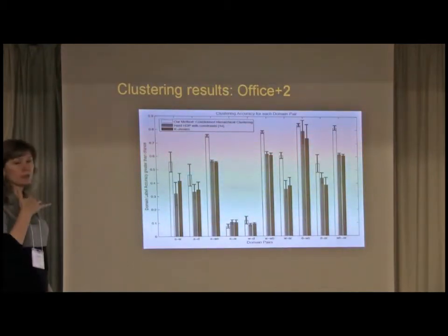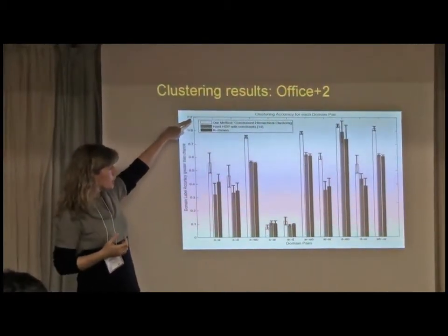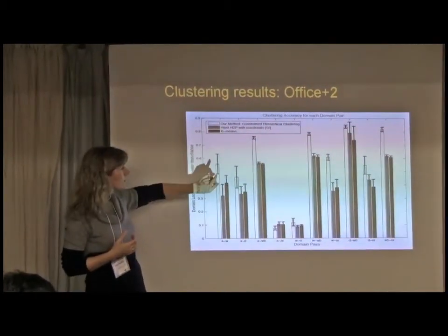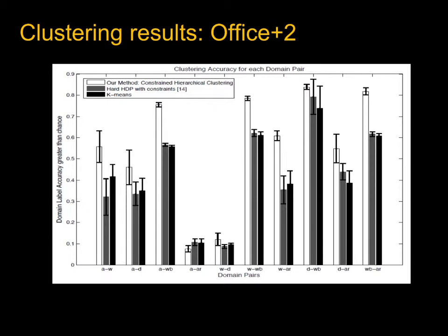Here are the results of clustering on the Office plus two dataset. The white bars is our method with constraint hierarchical clustering, and then we have two baselines. One is a simple k-means baseline. You see here that our method does much better, especially for some of the domain shifts. Here there's different combinations of domains, two domains each for each of these group of bars. For example, for Amazon and Blurred Webcam, we're much better at separating those two domains. Here we're pretending that we don't have domain labels. We're throwing them out. We're just using them for evaluation.